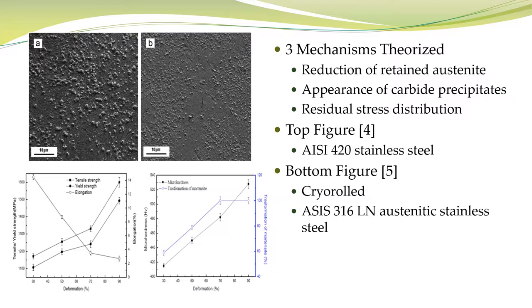As the figure shows, as the percentage increase of martensite increases, the tensile and yield strength also increase while the elongation decreases. The top figure shows SEM images: figure A before the cryogenic treatment and figure B after the cryogenic treatment. This shows an increase of carbide precipitates, caused by the strain energy associated with the martensitic transformation.